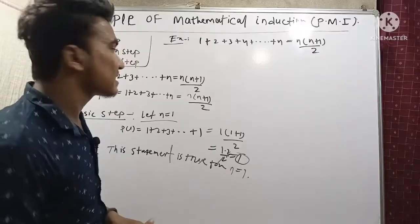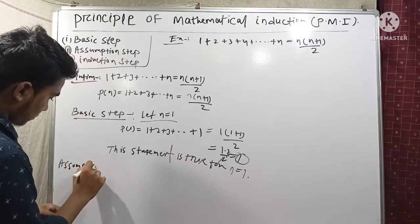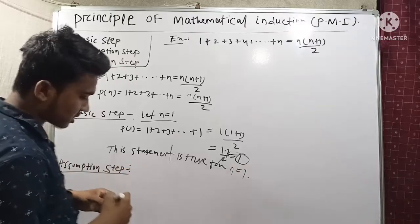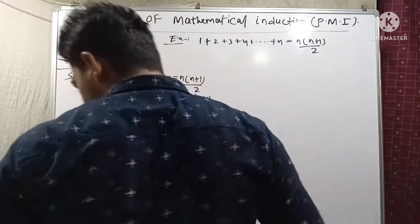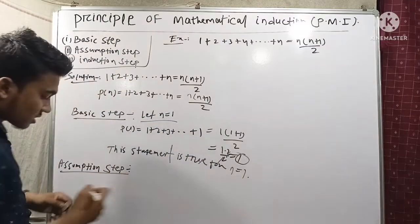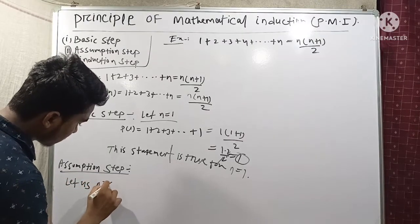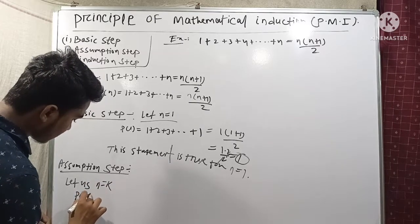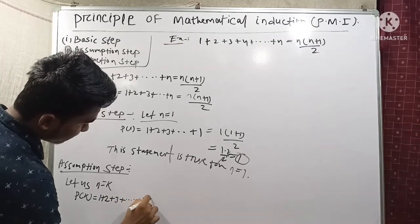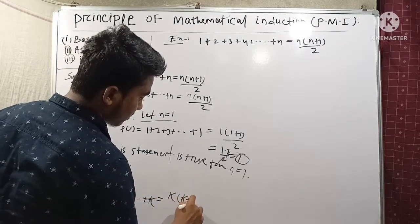Now the second step — our Assumption Step. Let us assume n = k. Then P(k) = 1 + 2 + 3 + ... + k = k(k+1)/2.